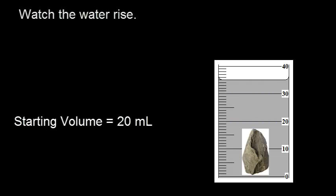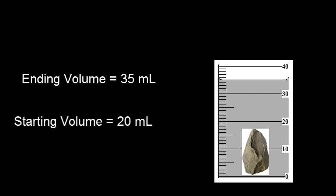Now we have a second point to record. So we look at the bottom of the meniscus again and record the new volume. Our new volume is 35 milliliters. Now we can find the volume of the rock.